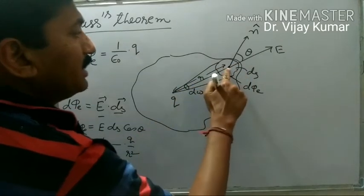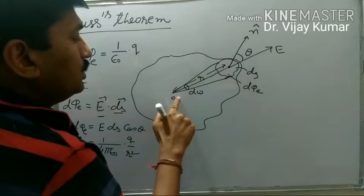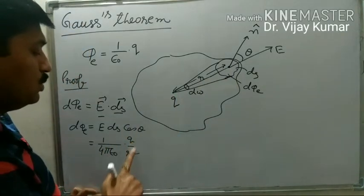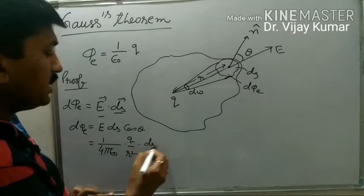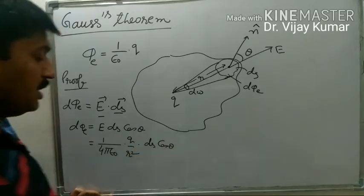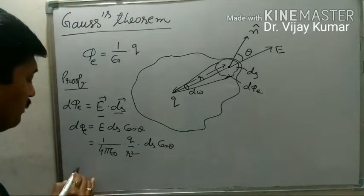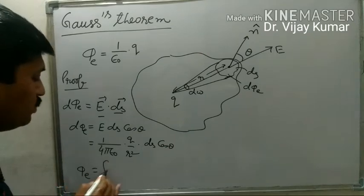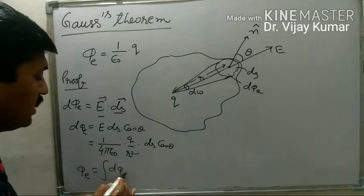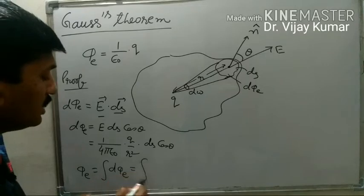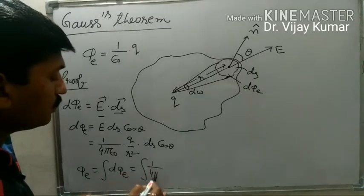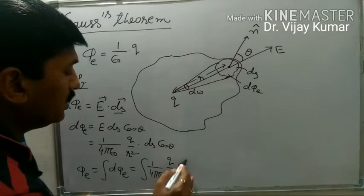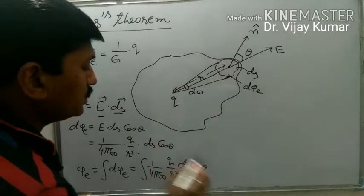The electric field at that point due to this charge particle should be equal to 1 upon 4 pi epsilon naught times q upon r square times ds cos theta. Now we want to determine the total electric flux: it should be the integration of d phi e, which equals the integration of 1 upon 4 pi epsilon naught times q upon r square times ds cos theta.